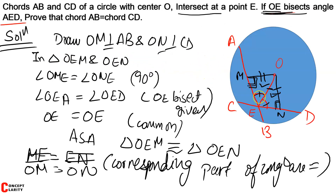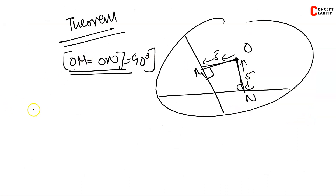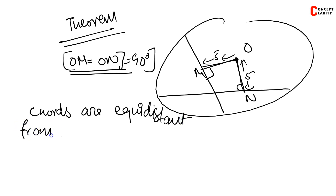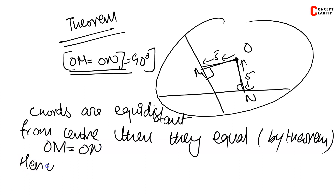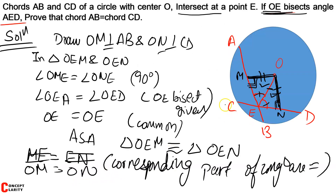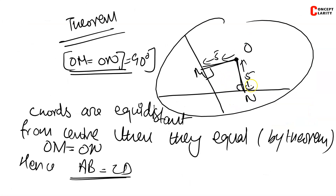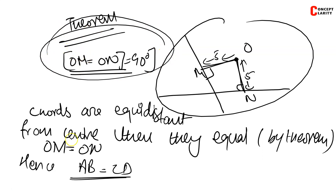So we can say: since the chords are equidistant from the center, and since we have proved that OM is equal to ON, hence AB is equal to CD. That's how we prove that these two chords AB and CD are equal in length. I hope you understand how easy it was and how important it is to know the theorems. If you like this video, please subscribe to Concept Clarity. Thank you for watching. Hope you have a good day.